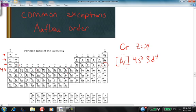So if we were following the aufbau ordering, we would expect that the electron configuration for chromium would be argon 4s2 3d4.